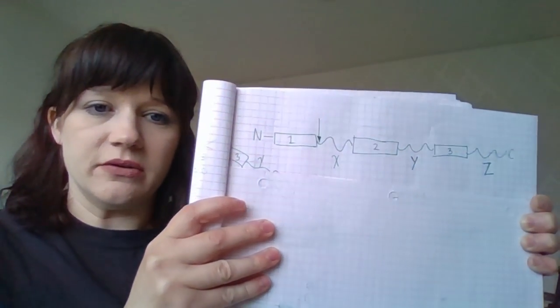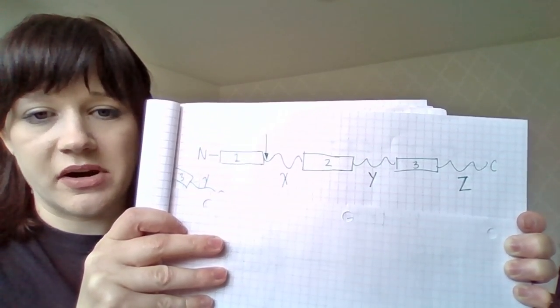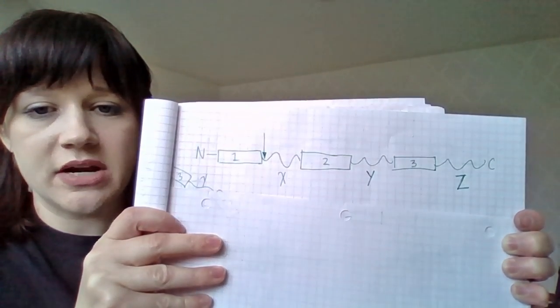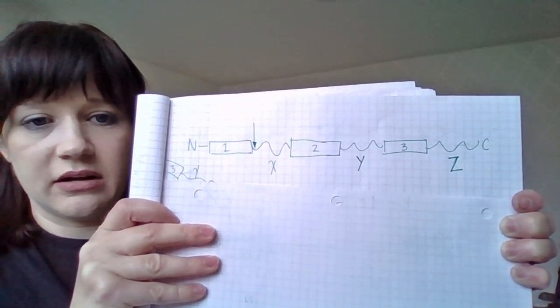Alright, so let's go over number three and also number four goes with it. So here we have a cartoon of a protein. It's got three transmembrane regions, one, two, and three. And then we've got in between, these regions are labeled X, Y, and Z.